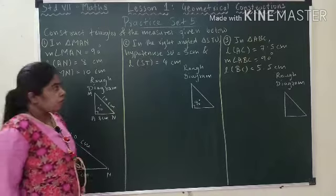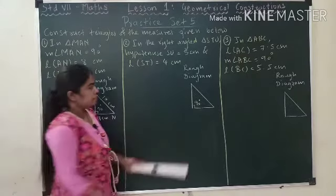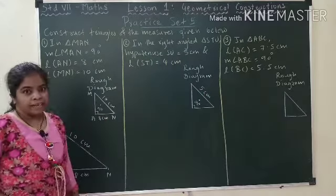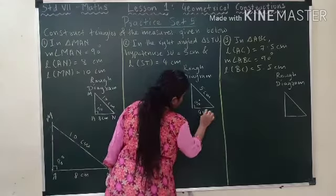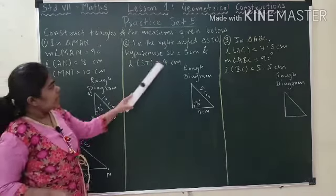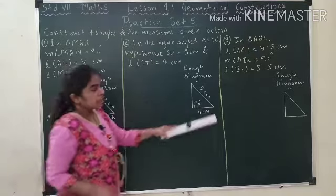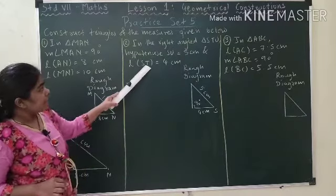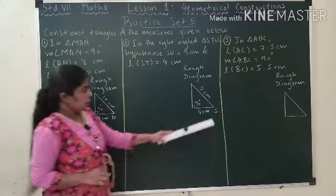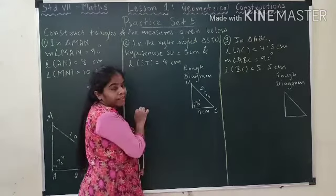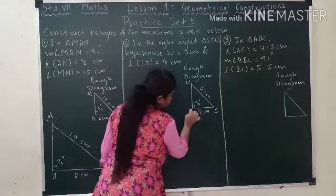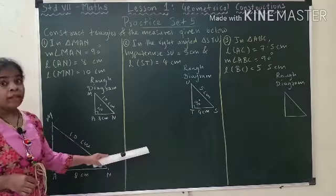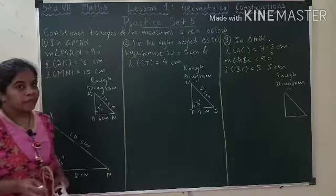Hypotenuse SU is equal to 5. This will be 5. ST is equal to 4 cm. Now we will draw our fair triangle using this information. Let's start with the base.